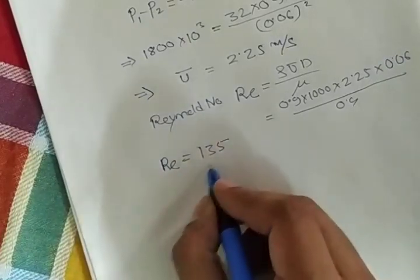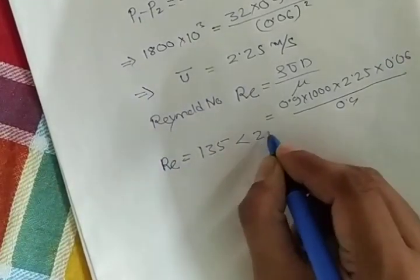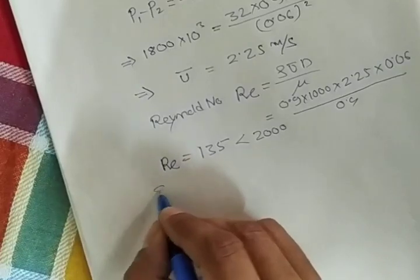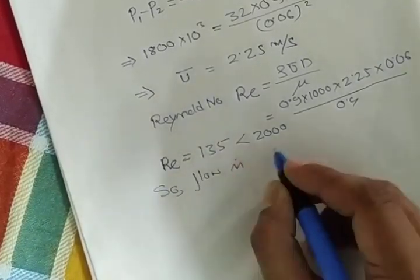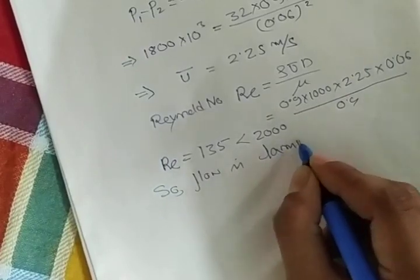This is less than 2000, so flow is laminar.